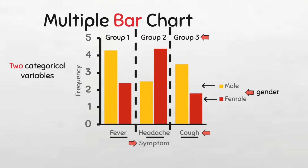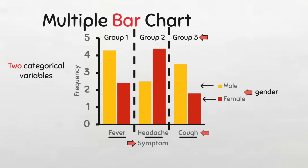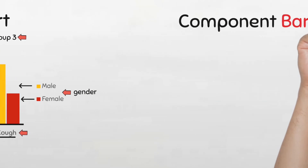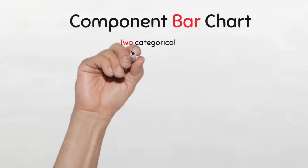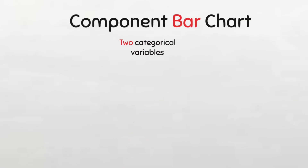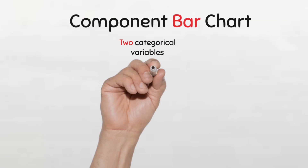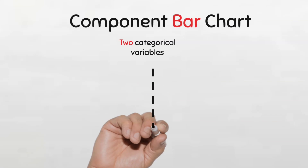And finally, we come to the component bar charts. This is also used to represent two categorical variables. But here, the bars representing the categories of the first variable are subdivided into components representing the categories of the second variable, i.e. the subcategories. There are two types of component bar charts.